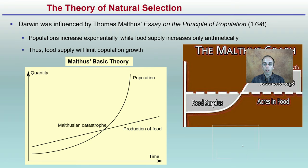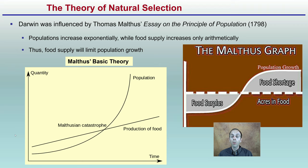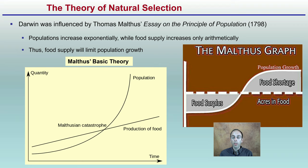This theory of natural selection also applies to food supply. Darwin was influenced by Malthus' essay The Principle of Population from 1798, where populations increase exponentially while food supplies increase only on a linear scale. Thus, food supply will limit population growth. In this example, when population is below the food threshold there's a food surplus, but over time if population grows there will be a food shortage, leading to competition and survival of the best fit.